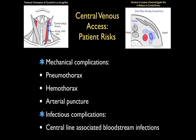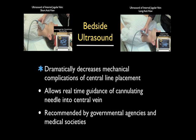However, there are serious patient risks involved with placement of a central venous catheter. The two main groups of complications are mechanical and infectious. Mechanical complications include pneumothorax formation, hemothorax formation, and inadvertent arterial puncture with hematoma formation. Central line associated bloodstream infections are an increasingly recognized cause of increased morbidity and mortality. Because of these recognized complications, bedside ultrasound has stepped up to help lower the complication rate.